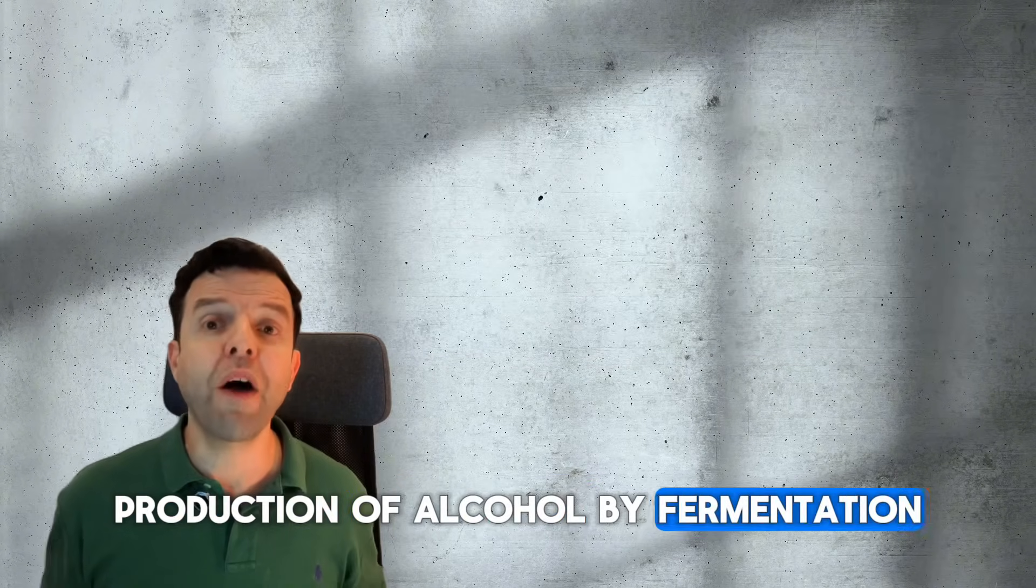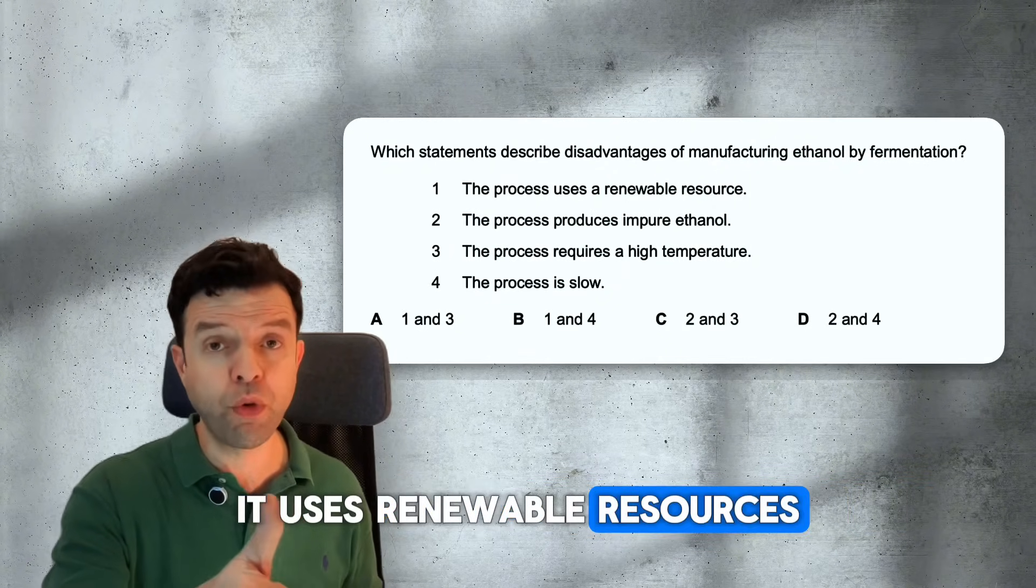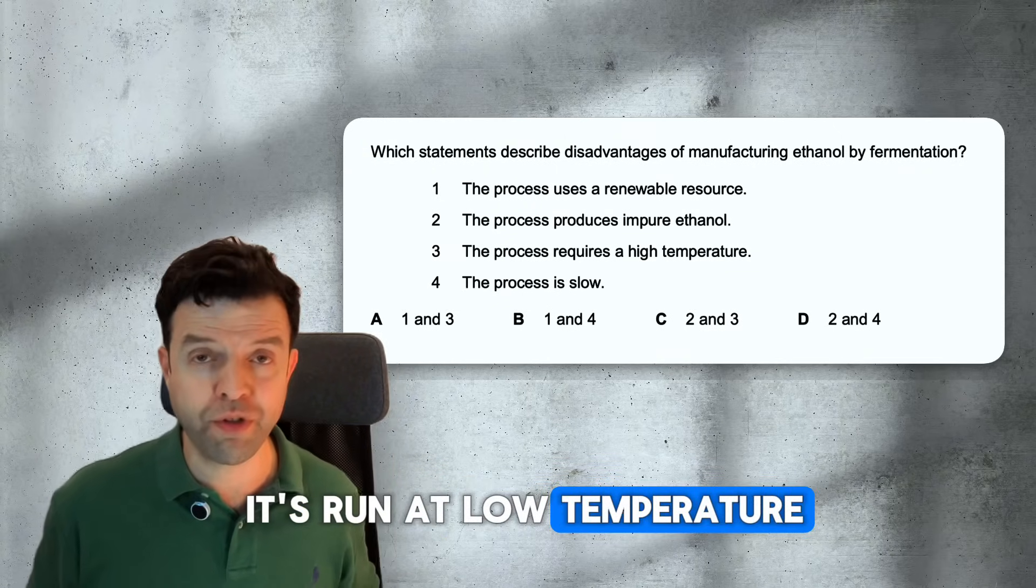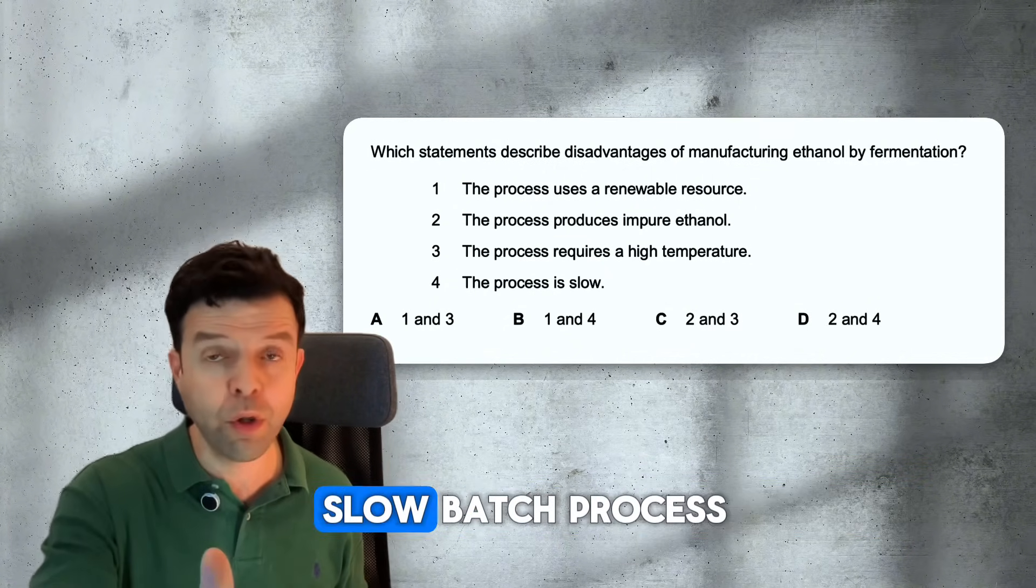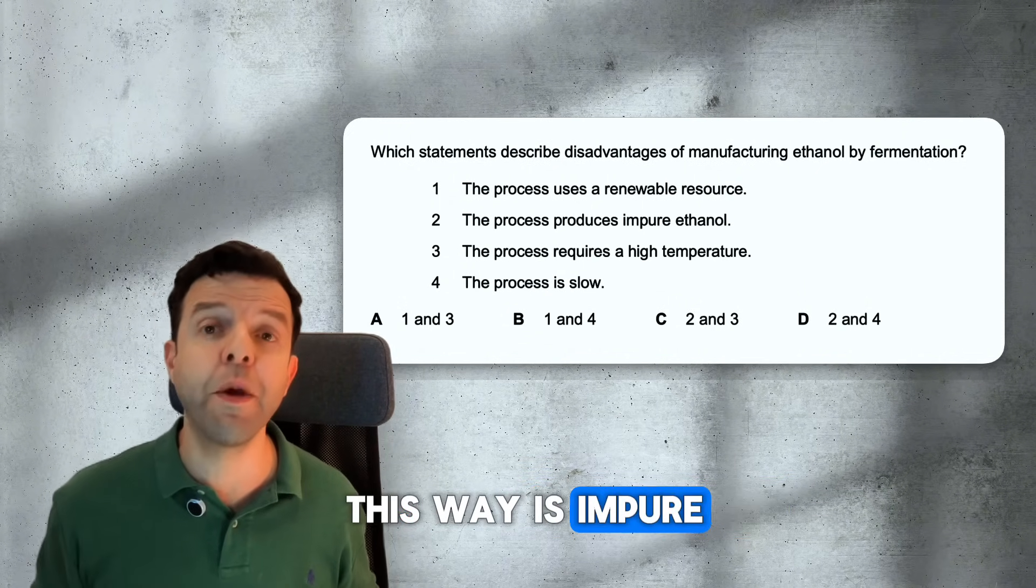Production of alcohol by fermentation has two great advantages. First, it uses renewable resources, that is glucose. Second, it saves energy because it's run at low temperature. The two disadvantages of fermentation is that it's a slow batch process and the alcohol produced this way is impure.